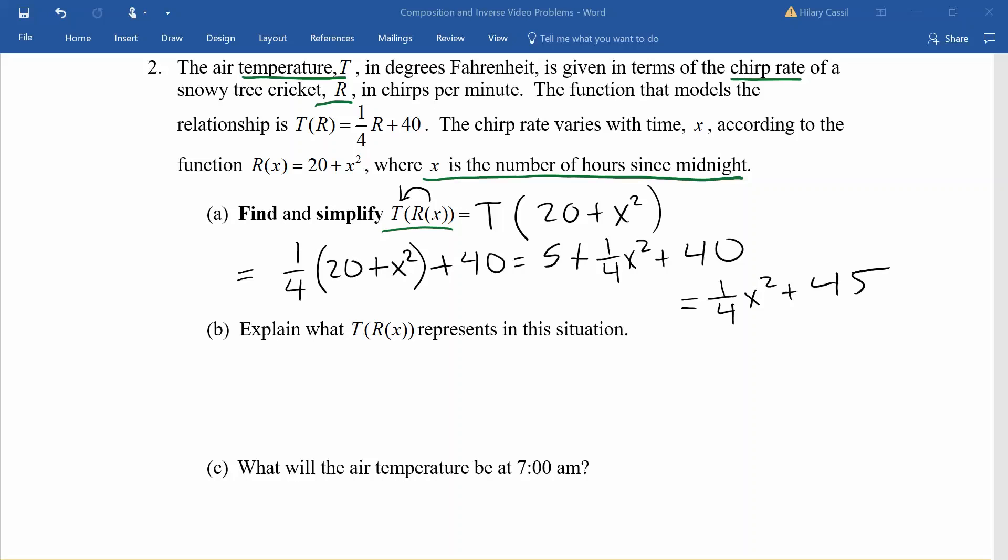Now in order to explain what this represents, I like to remind ourselves exactly what's going on. When we compose two functions, we're essentially eliminating a variable. We started with T of R of x, and the middleman is this variable R. What we end up with is T as a function of x for that composite function. This function gives us T if we know x. In other words, it gives us the temperature as a function of the number of hours since midnight.